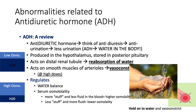High doses of ADH actually cause vasoconstriction. When I say high doses, this often refers to administering ADH IV — giving patients synthetic ADH. Some of you may have seen patients in the ICU on vasopressors like norepinephrine or phenylephrine to increase blood pressure in patients who are in shock or hypotensive. Another vasopressor is called vasopressin, and vasopressin is actually ADH. When we give vasopressin, we see less urine output, more water in the body — increasing blood pressure by increasing volume — and vasoconstriction in the periphery, further increasing blood pressure.